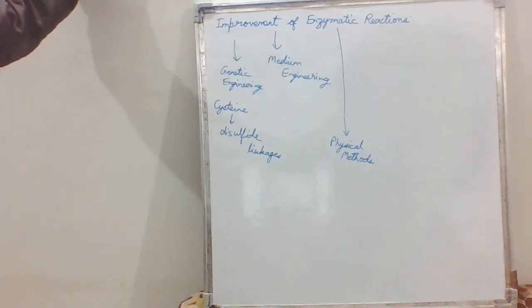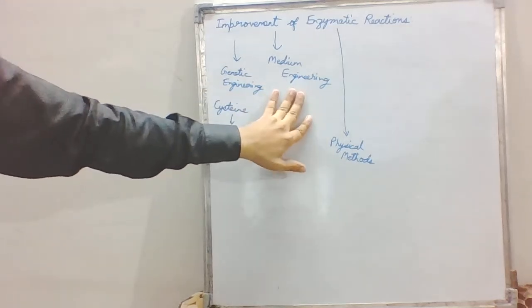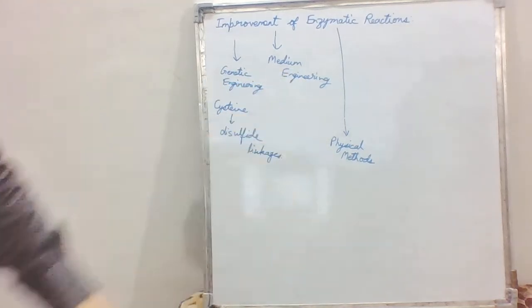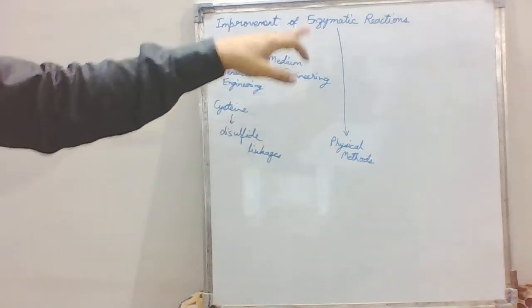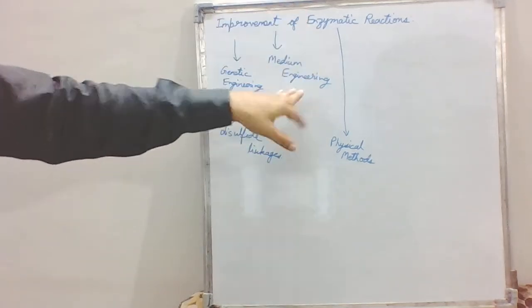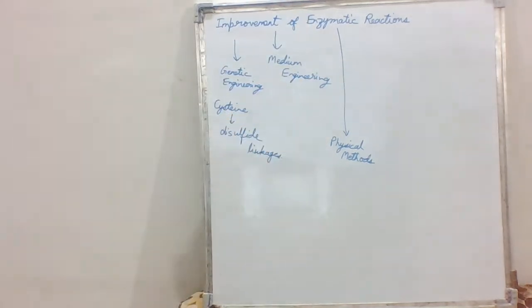We have seen that we can change the selectivity of the enzyme, the specificity of the enzyme. Even the activity, although the activity is lower than that in the aqueous counterpart, nevertheless we can find new applications of the same enzyme in different organic solvents. Medium engineering is one of the methods of improving the enzymatic reactions or improving the application of the enzymes.